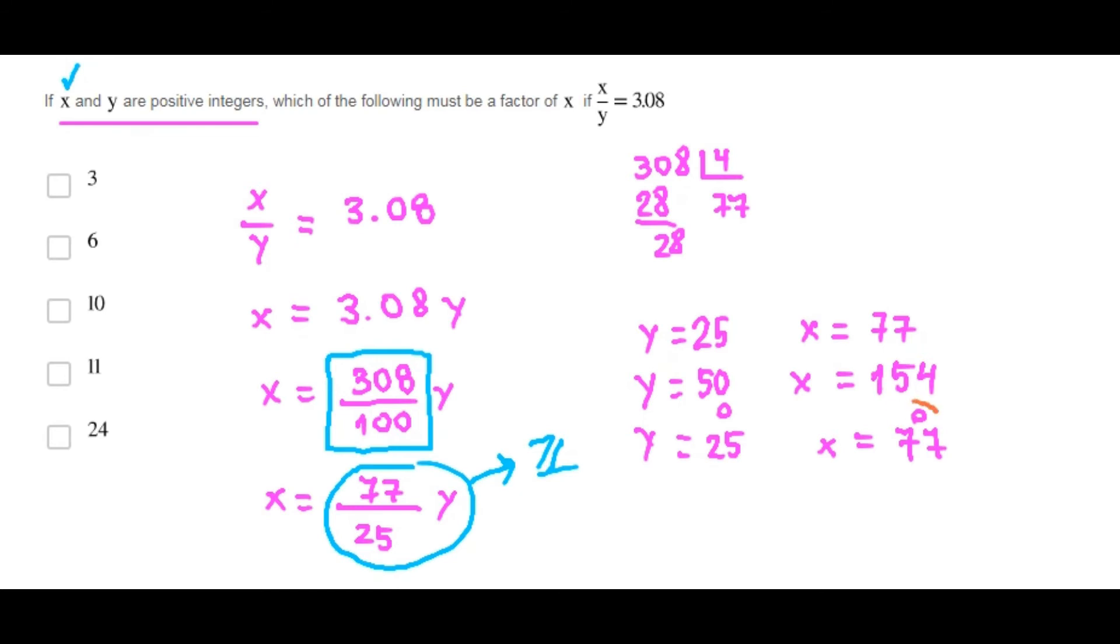Since X is always going to be a multiple of 27, the factors of X will always be 1, 7, and 11.